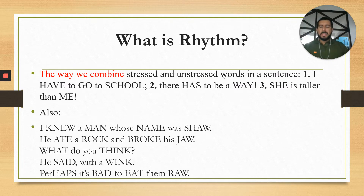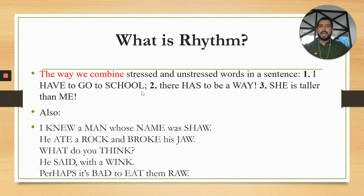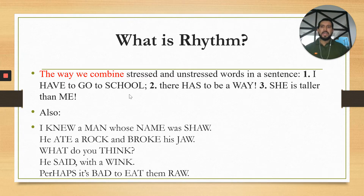What is rhythm? Rhythm is simply the combination of stressed and unstressed words in a sentence or phrase. Take the sentence 'I have to go to school.' The main stressed words are 'have,' 'go,' and 'school.' If I delete 'I' and 'to,' you would still get the message. If all you hear from a distance is 'have, go, school,' you still understand it. That's how rhythm works.